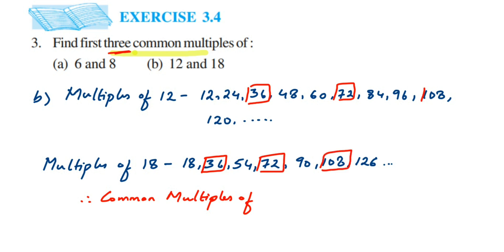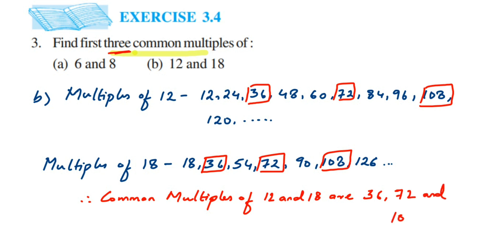We have got all 3 multiples, so I don't have to continue. You can stop in between once you have found 3 multiples. Therefore, the common multiples of 12 and 18 are: 36, 72, and 108. I hope this question is clear. In case you have any other question or doubt, you can drop a comment. Thank you so much for watching.